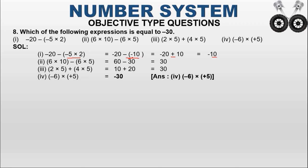Option B: 6 into (10 minus 6 into 5). Executing brackets: 6 into 10 equals 60, 6 into 5 equals 30, then 60 minus 30 equals 30. Option C: 2 into 5 plus 4 into 5. 2 into 5 equals 10, 4 into 5 equals 20, then 10 plus 20 equals 30. Option D: minus 6 into plus 5. Different signs, so minus. 6 into 5 equals 30, giving minus 30. The correct answer is option D (minus 6 into plus 5 equals minus 30).